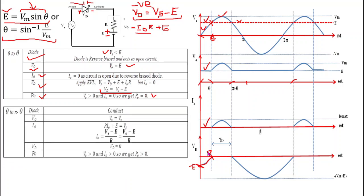From θ to π-θ, the sinusoidal voltage VM sin(ωt) lies above EMF E, so VS is greater than E. This gives Vd positive, meaning the diode is forward biased and starts conducting. When the diode conducts, the source voltage VS appears across the load, so V0 equals VS.